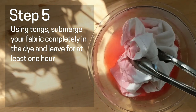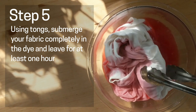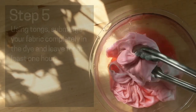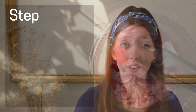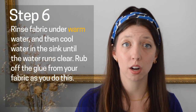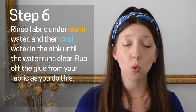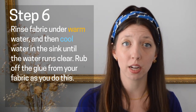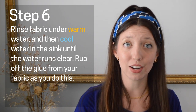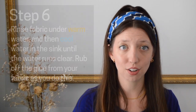Leave your fabric in the dye for at least an hour, or until you feel good about how saturated the color is. Once you're happy with the color, pull your fabric out of the dye and rinse under warm, clean water, and then under cool water. You'll want to keep rinsing your fabric until the water that runs out of it is clear. As you rinse, rub off the glue that formed your pattern.